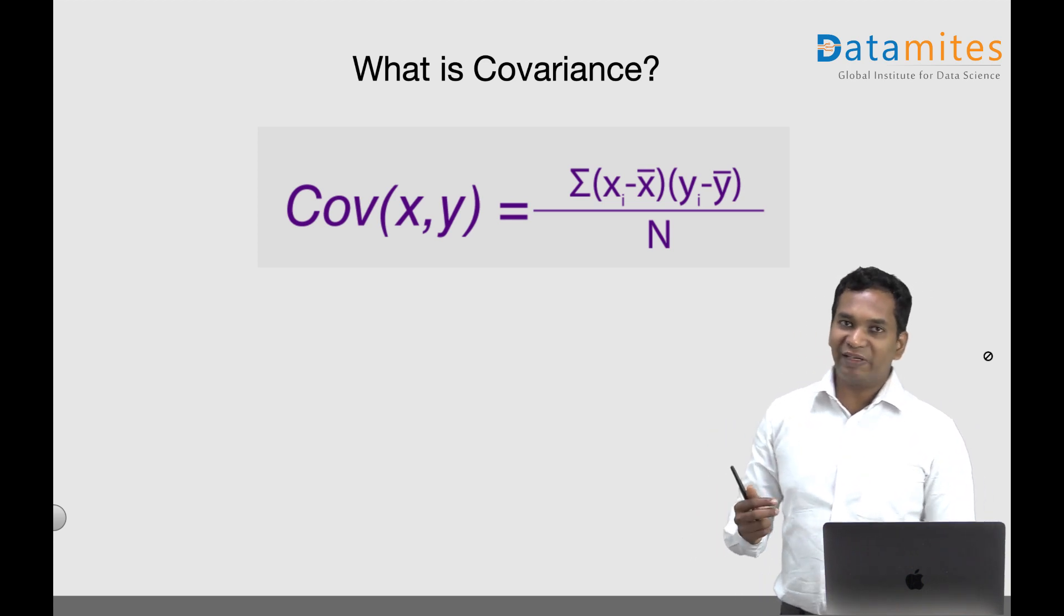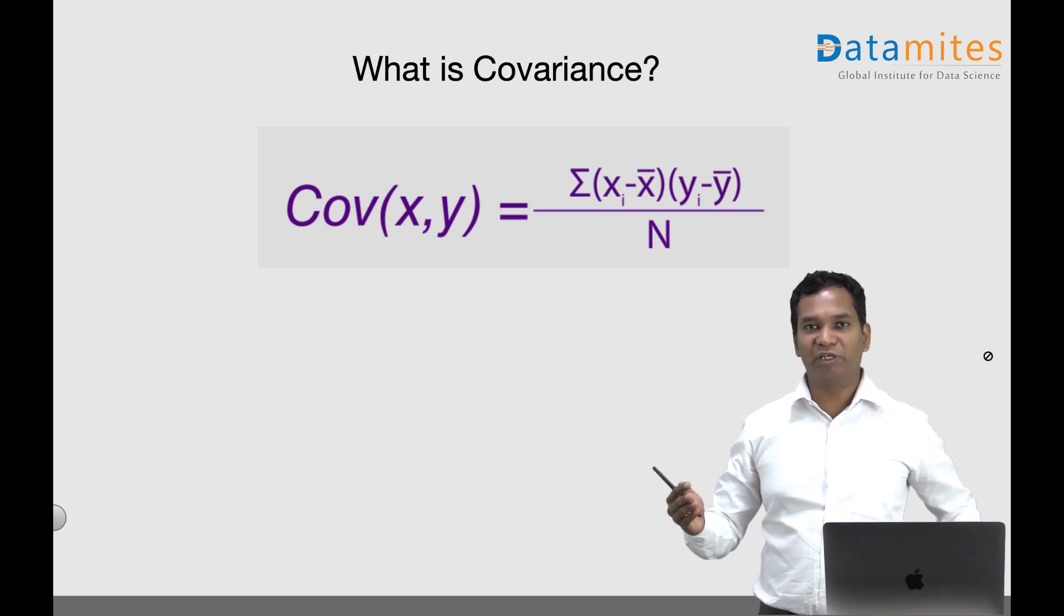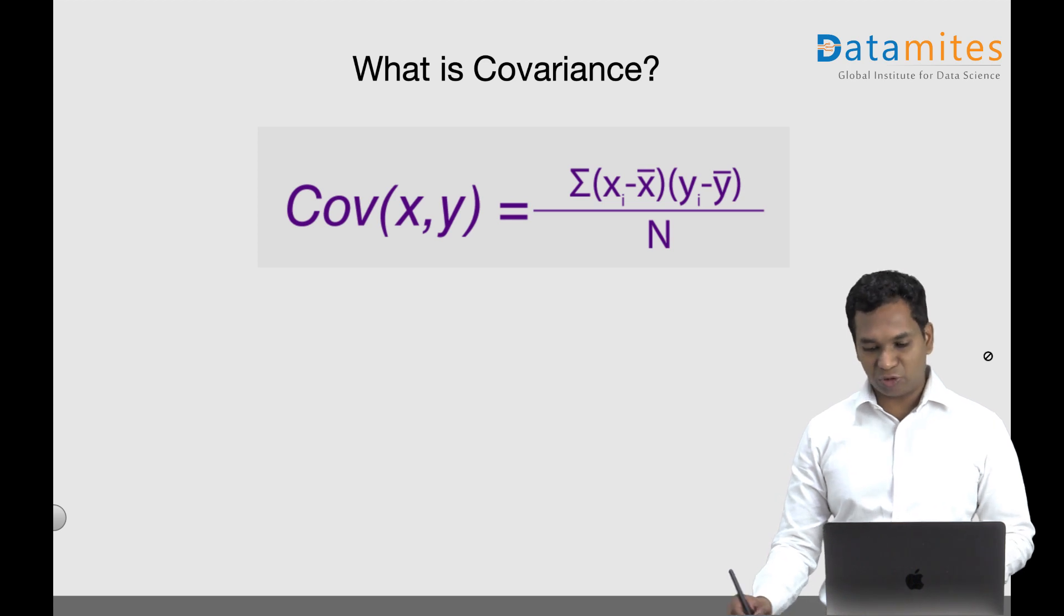The covariance value can vary from anywhere to anywhere - it's difficult to give a range, it can have any value. But if you normalize the covariance, that's what we call correlation.